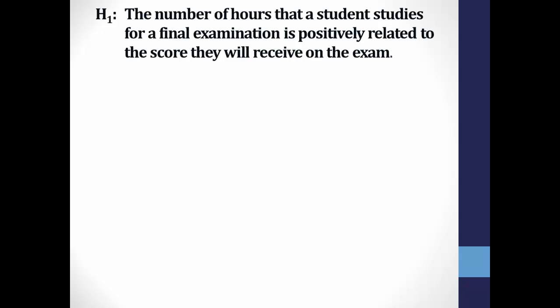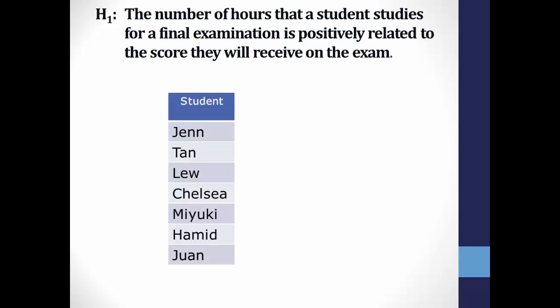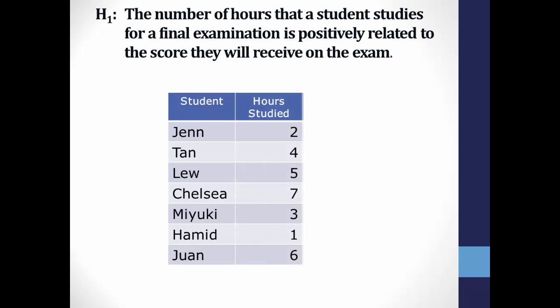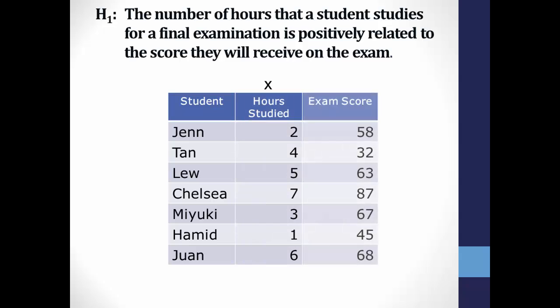Back to our hypothesis: there is a correlation between the number of hours spent studying for an exam and the resulting score on the final examination. You gather data from seven students on the hours they study, which we will call the x variable, and their exam scores, the y variable. So the n for each variable is seven — in total, you have 14 observations, seven for x and seven for y — and you'll need to know this to calculate degrees of freedom.